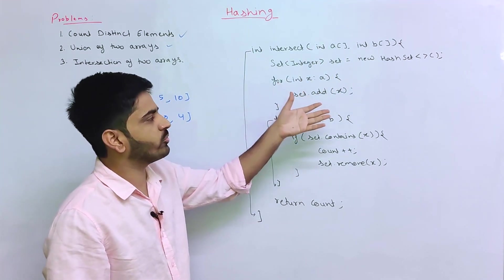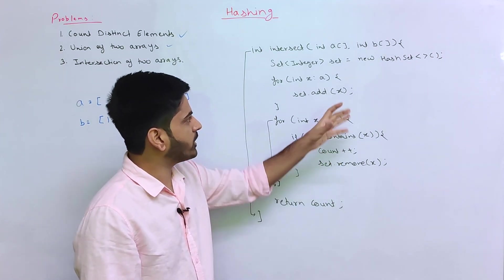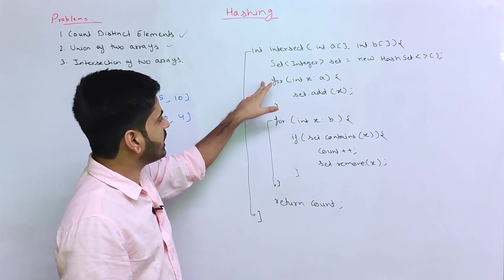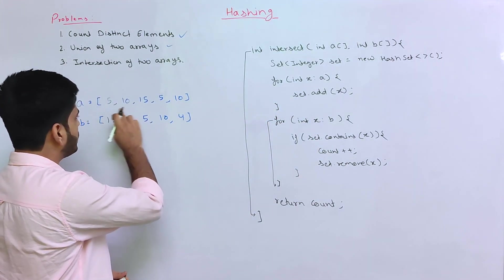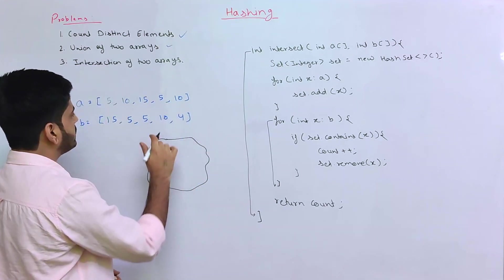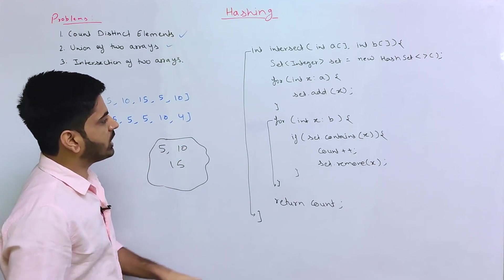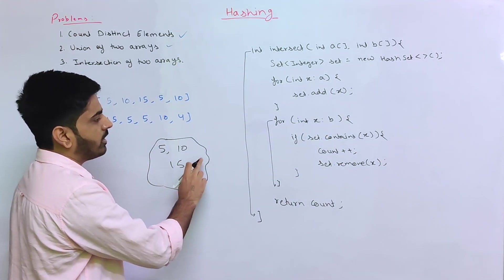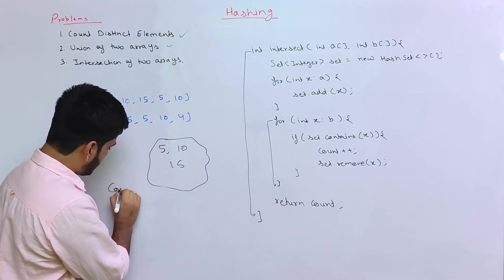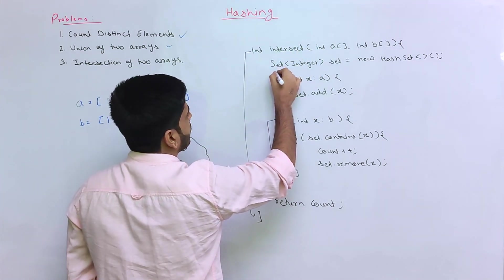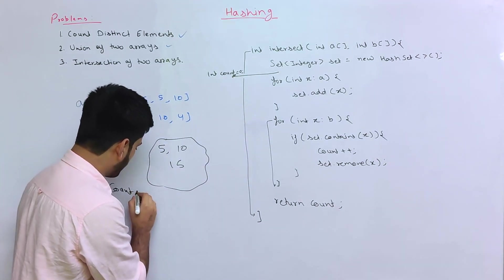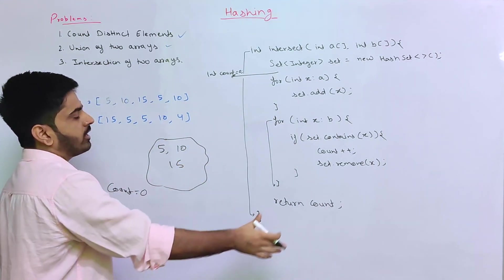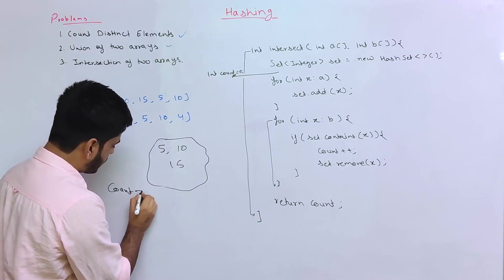If you look at the first solution, it is a little twist and change. Basically, we set up a HashSet and populate it using the first array so it contains unique elements. Then we iterate through the second array and check whether each element is present in the set. If it is present, we maintain and increment our count.